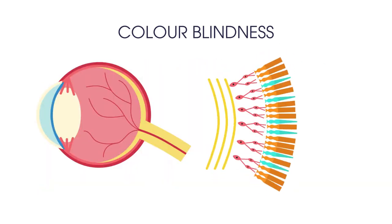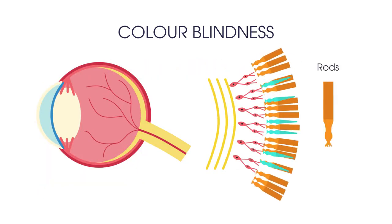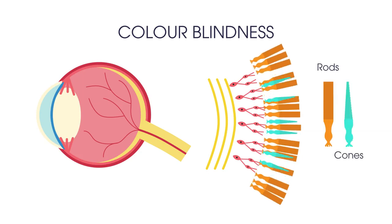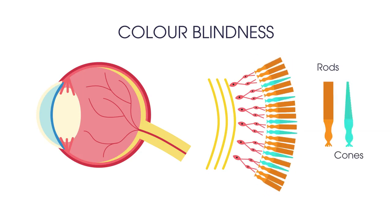The receptor cells in the retina of your eye are called rods and cones. Rods detect light intensity and cones detect colors. Rod cells are used when there is little light and cone cells help you see colors. The cones in colour blind individuals are either fewer in number or simply absent.